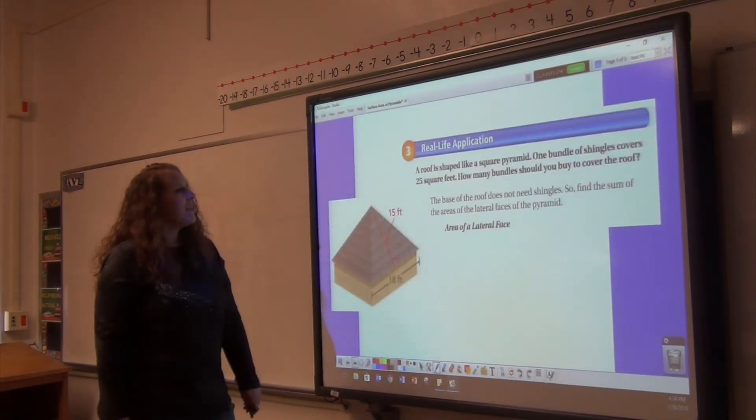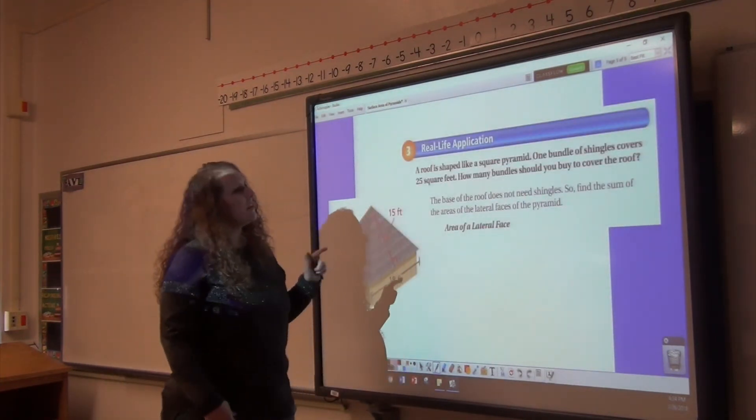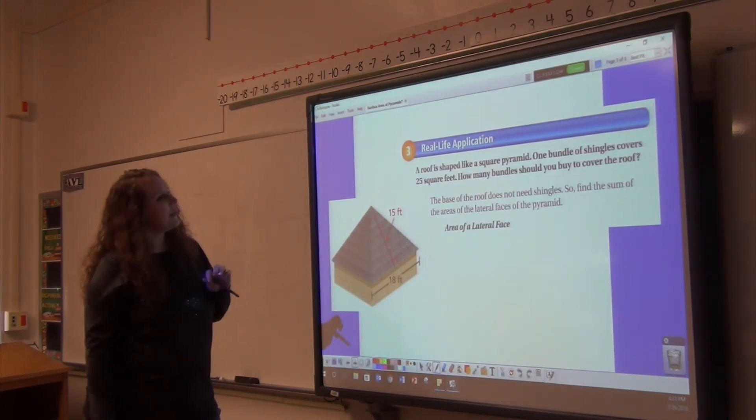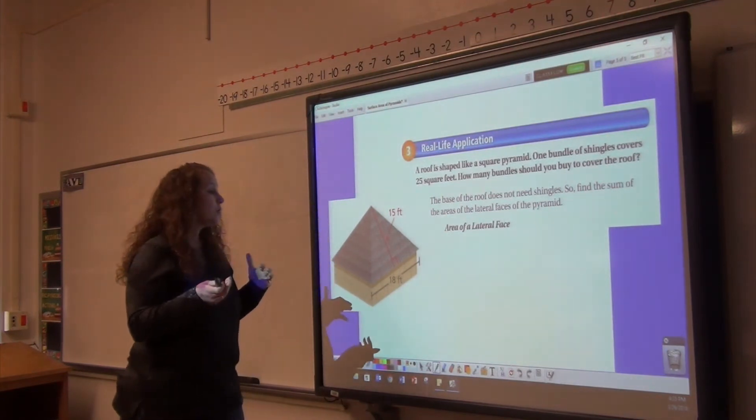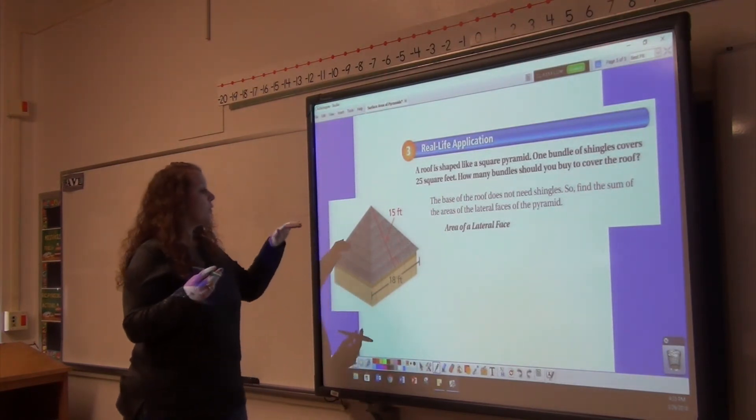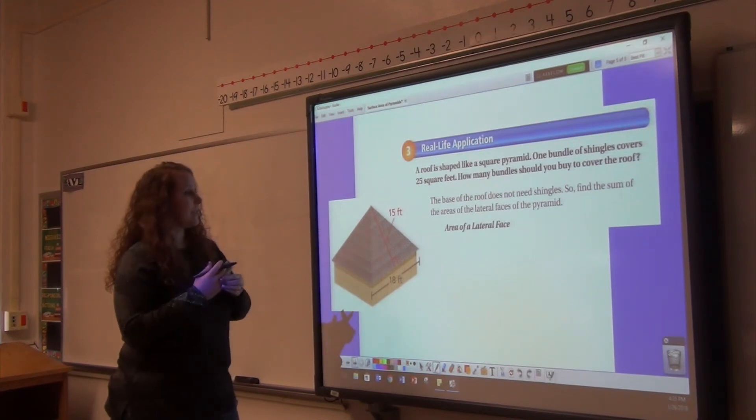The roof is shaped like a square pyramid. One bundle of shingles covers 25 square feet. How many bundles should you buy to cover the roof? We don't have to worry about the base in this case. We are not going to shingle the base of this pyramid. We're only going to shingle the four sides.